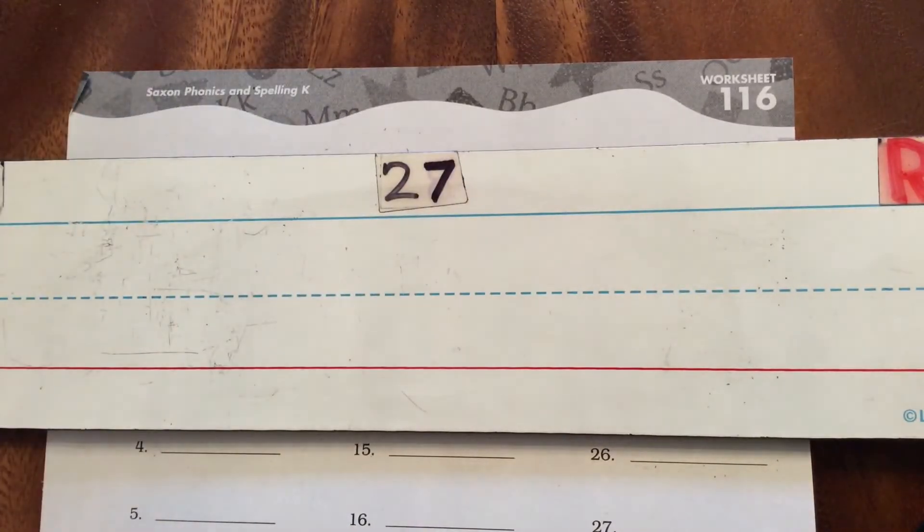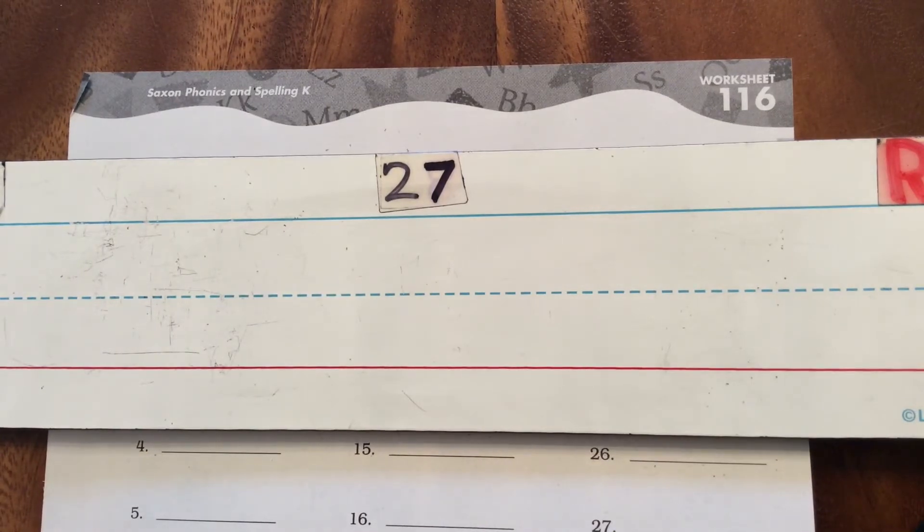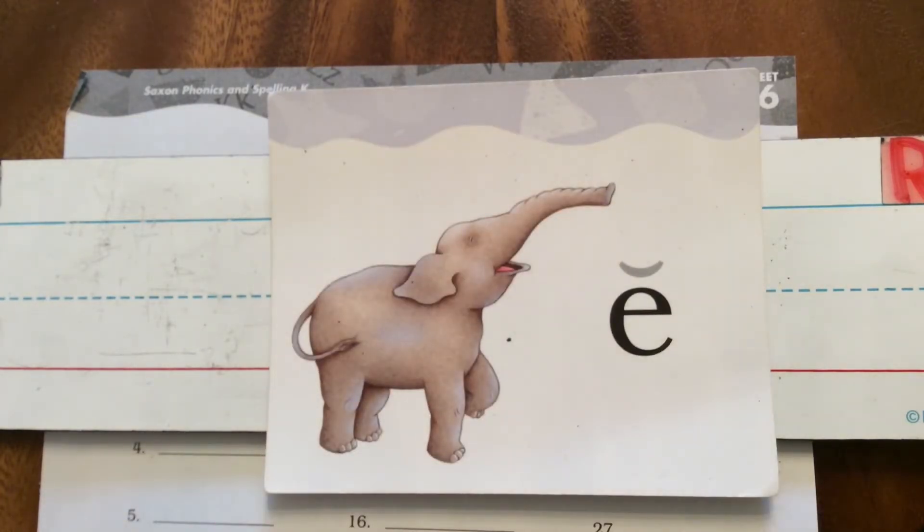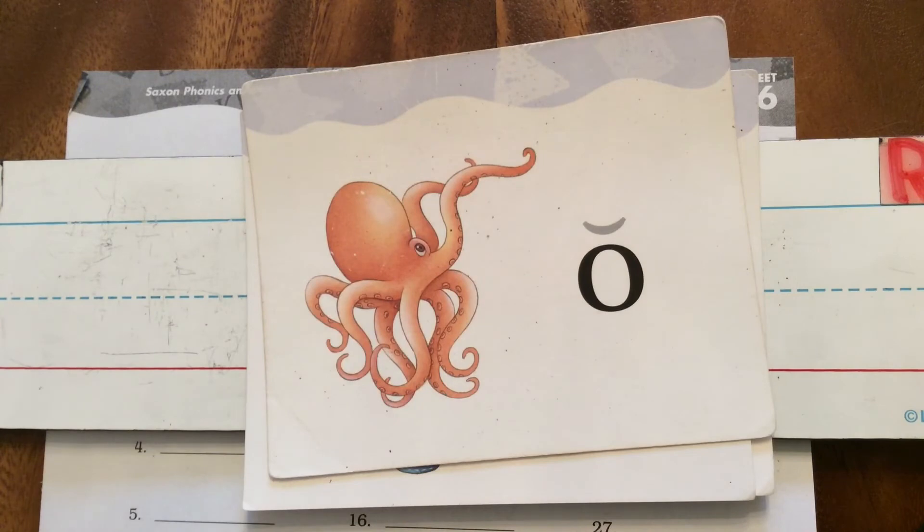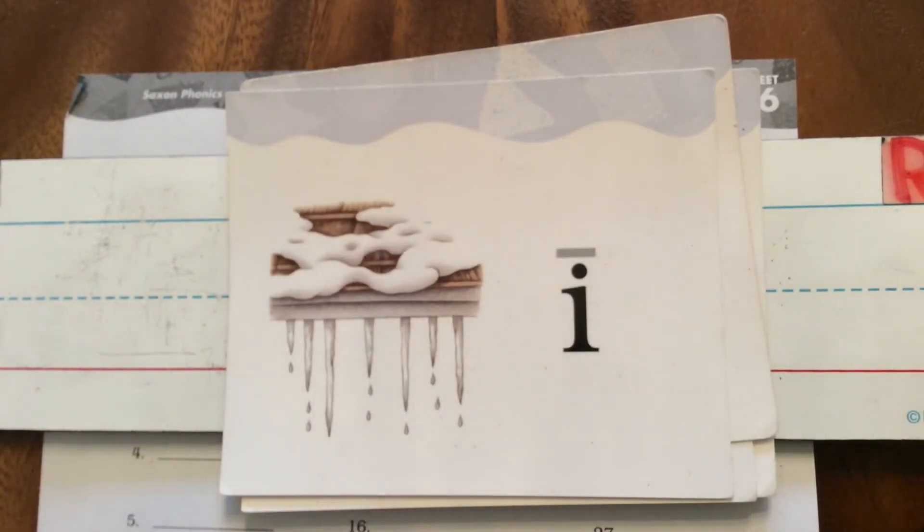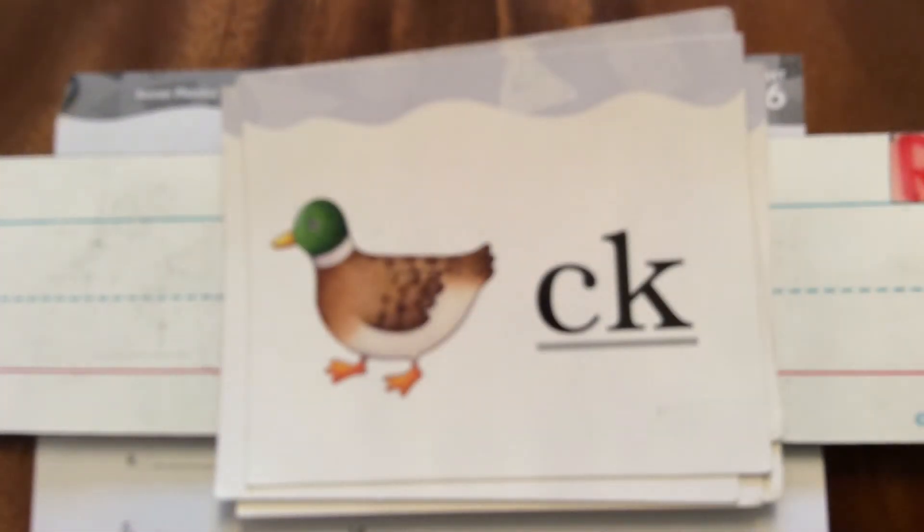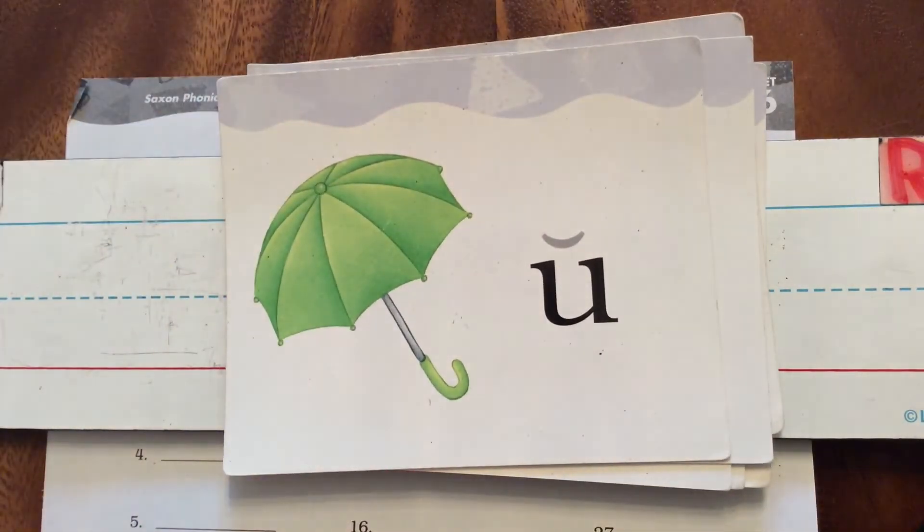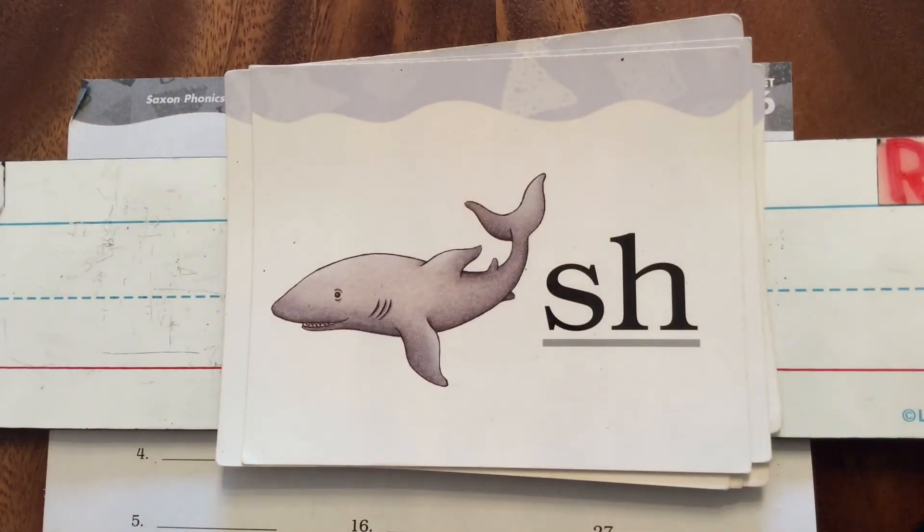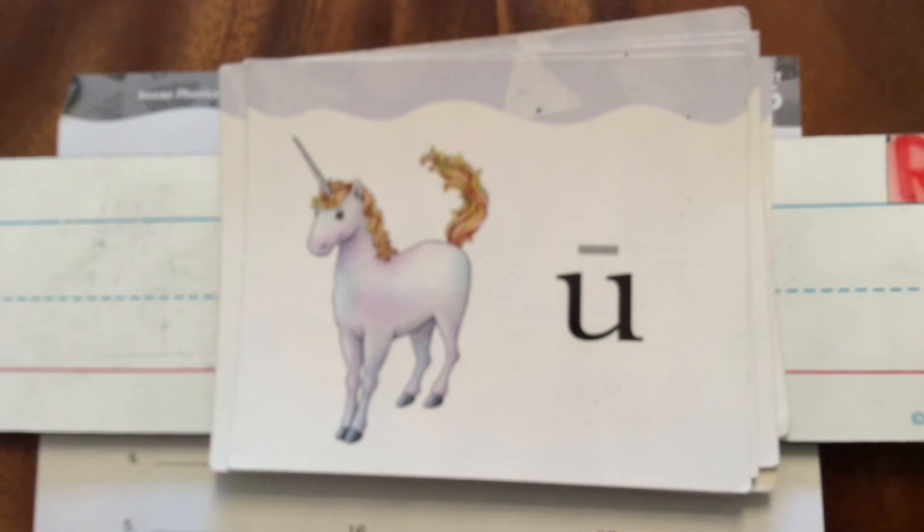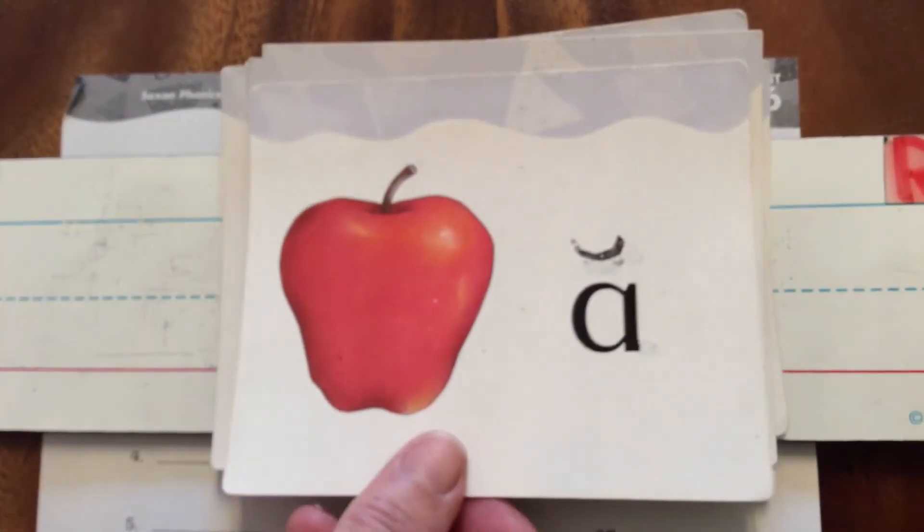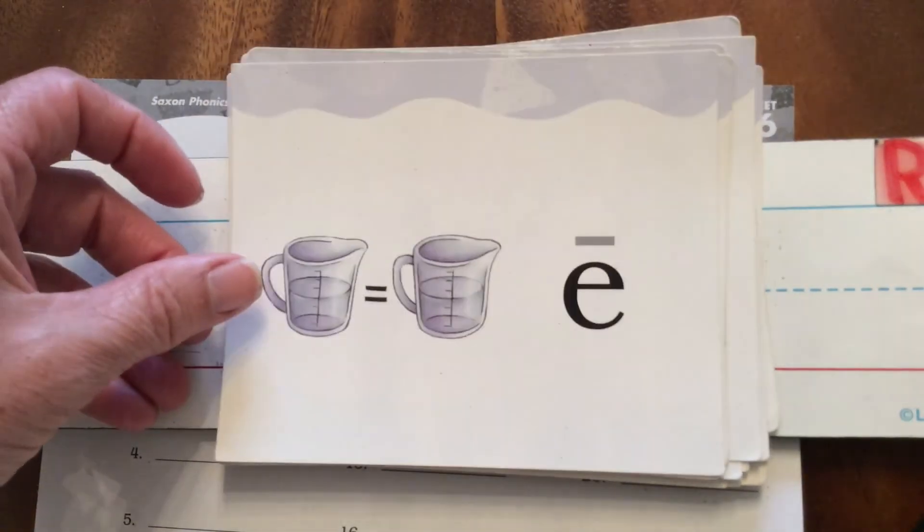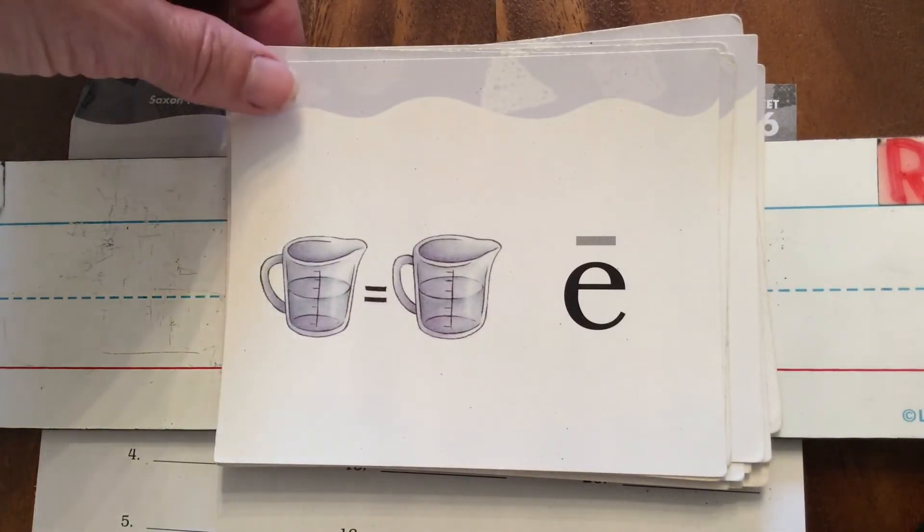Now we're gonna review some of our letters and sounds together, and you can say them as we do them. Elephant A, overalls O, octopus A, icicle I, duck C, umbrella A, shark sh, unicorn U, acorn A, apple A, inch I. Great job boys and girls.